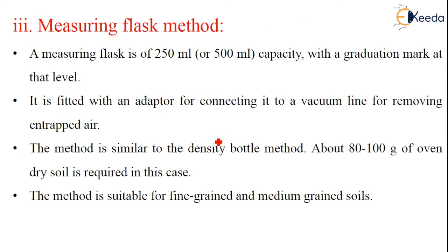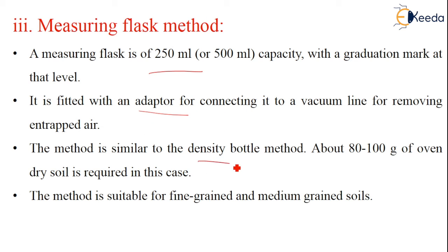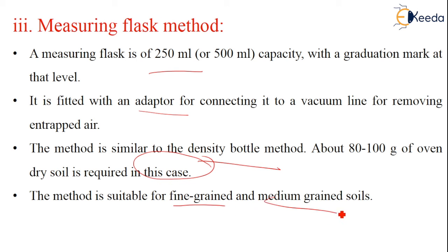Coming to the measuring flask method. In this method, we use a measuring flask of 250 ml or 500 ml capacity with a graduation mark at that level. It is fitted with an adapter for connecting it to a vacuum line for removing entrapped air. This method is very similar to the density bottle method. About 80 to 100 grams of oven-dry soil is required, and this method is very suitable for fine-grained and also medium-grained soils.